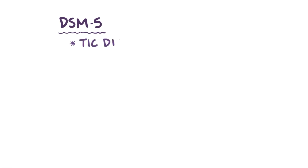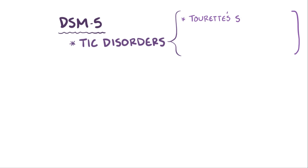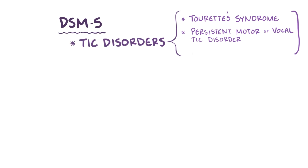The DSM-5, or the fifth edition of the Diagnostic and Statistical Manual, lists three major types of tic disorders: Tourette's syndrome, which is most well-known, persistent motor or vocal tic disorder, and provisional tic disorder.